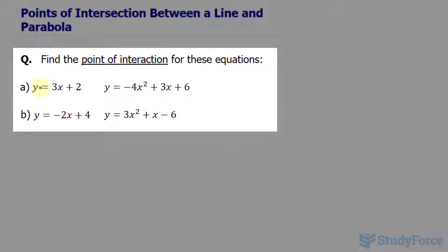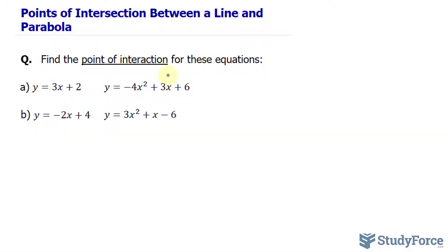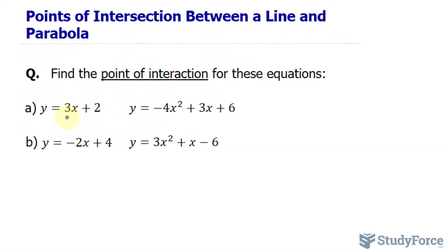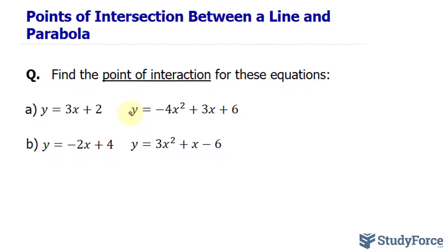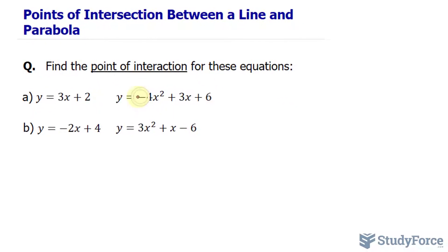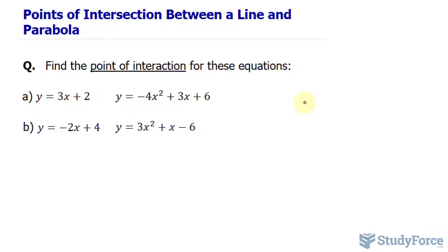So we'll start with A. The first thing you want to do is make these two equations equal to each other. The good thing is that in both of these examples, we have Y isolated. Sometimes you'll get an equation where that's not the case, so you need to make sure that Y is isolated. So by making this equation and this equation equal to each other, we can start the process.